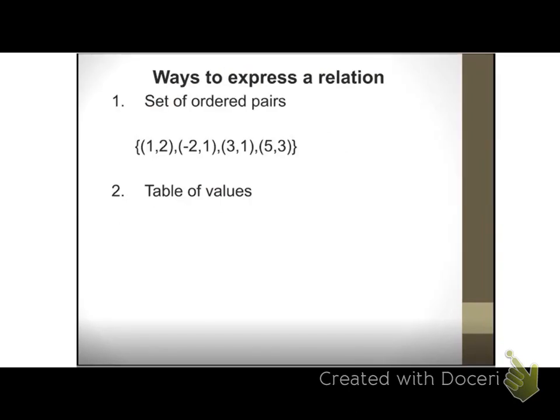We have different ways to express a relation. The first one we've already seen is a set of ordered pairs — that's one way to express a relation. So (1, 2), (-2, 1), (3, 1), (5, 3) with our squiggly brackets. The second way to express a relation is what we call a table of values. You've probably seen this before.